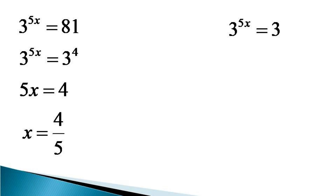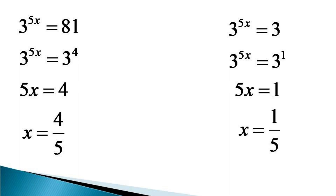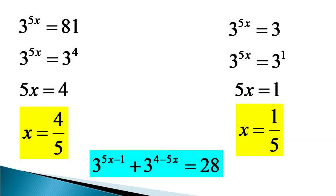Considering the second solution, 3 raised to the power 5x equals 3, which can be expressed as 3 raised to the power 5x equals 3 raised to the power 1. Here also the bases are equal, so the indices must be equal, giving 5x equals 1, or x equals 1 by 5. This is how we get two solutions of the given equation: x equals 4 by 5 and x equals 1 by 5. We can verify that both solutions satisfy the original equation, 3 raised to the power 5x minus 1 plus 3 raised to the power 4 minus 5x equals 28. Thanks for watching.